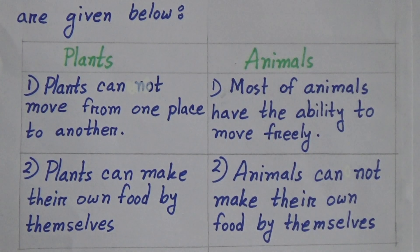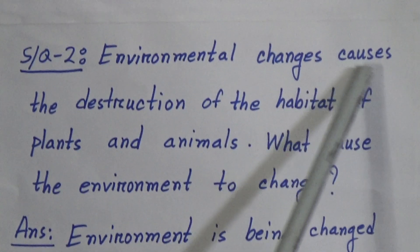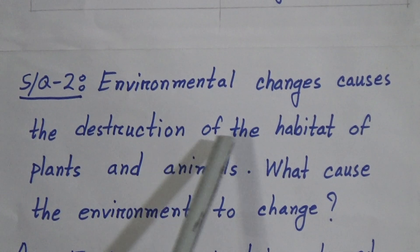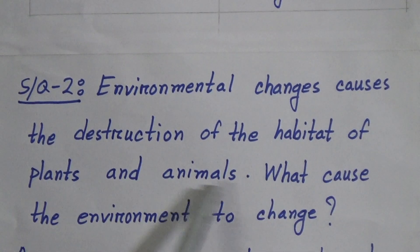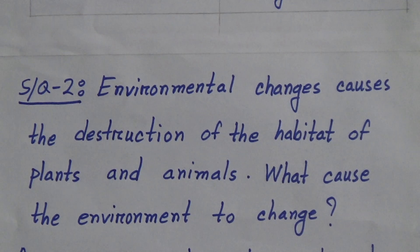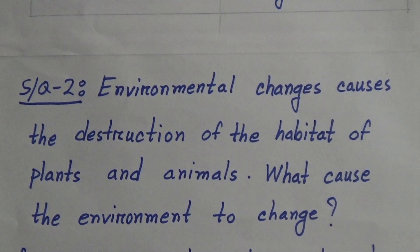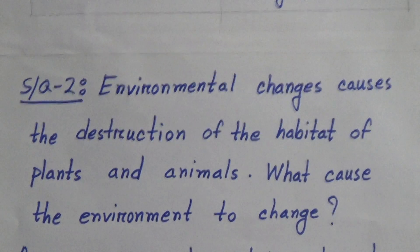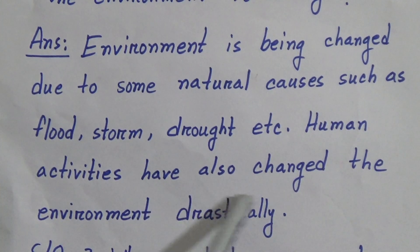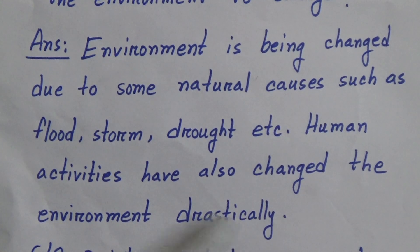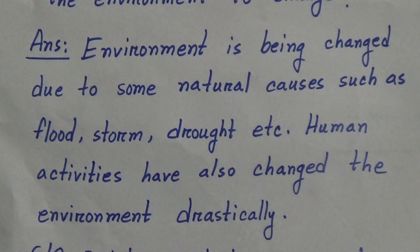Short question two: environmental changes cause the destruction of the habitat of plants and animals. What caused the environment to change? Answer: the environment is being changed due to some natural causes such as flood, storm, drought, etc. Human activities have also changed the environment drastically.